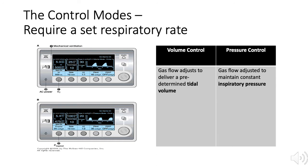The ventilator is set using a control mode because the respiratory rate is set at 10 breaths per minute. The ventilator is set to deliver the breaths using pressure control because the inspiratory pressure, or P-inspired, is set to 20 centimeters of water. For each of the 10 breaths delivered in one minute, the ventilator will apply 20 centimeters of water. You would report the patient is receiving pressure control ventilation at a rate of 10 and an inspired pressure of 20 centimeters of water.